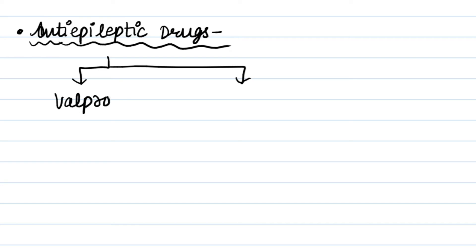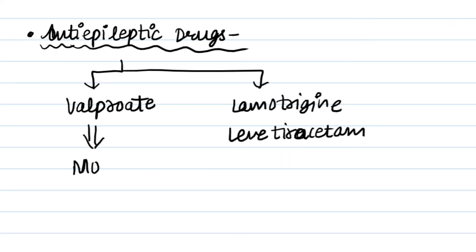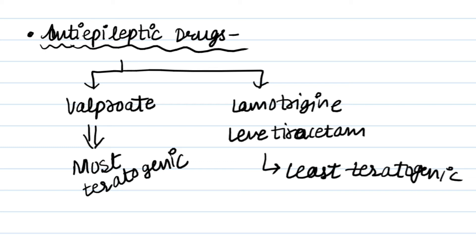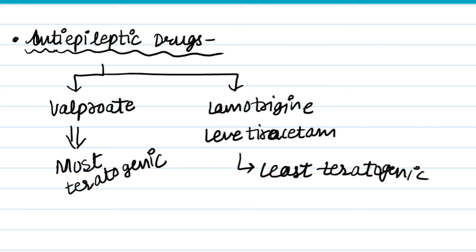Next group of drug is anti-epileptic drugs. It includes two drugs. First one is valproate. Second one is lamotrigine and levetiracetam. But valproate is most teratogenic, and lamotrigine and levetiracetam are least teratogenic. So we will prefer lamotrigine and levetiracetam. For the first time treatment of epilepsy in pregnancy, levetiracetam and lamotrigine are preferred.